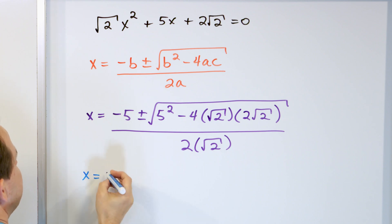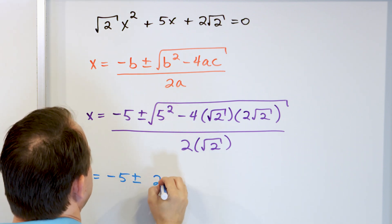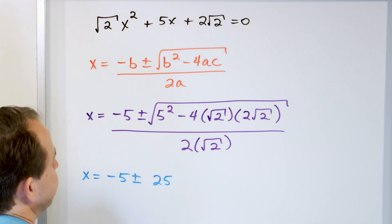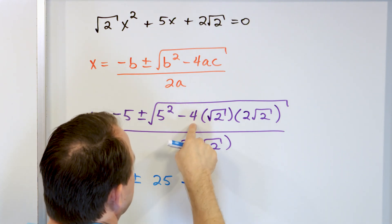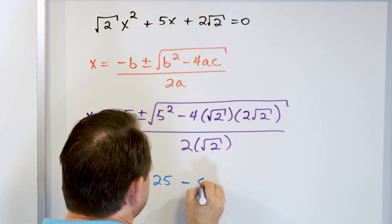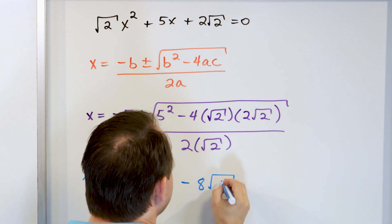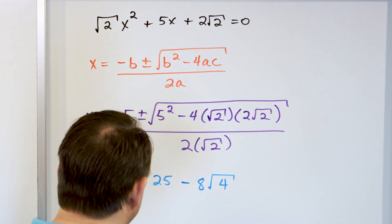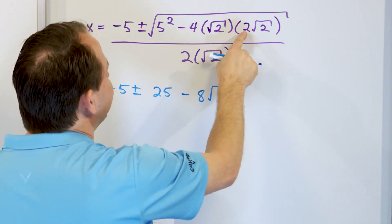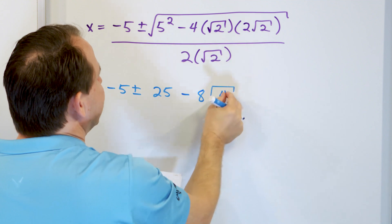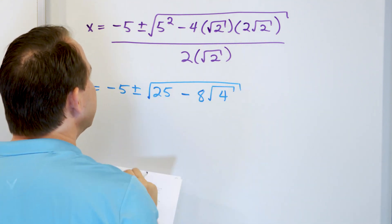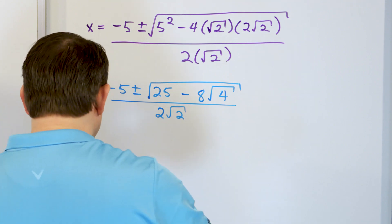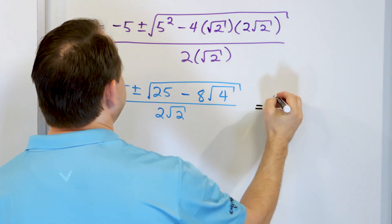Now we just have to be careful as we do the multiplication. Negative 5, plus or minus: 5 squared is 25. Here we know it's going to be a negative because of the negative sign. We have 4 times 2, which is 8. And then we have square root of 2 times square root of 2 — I'll write that as the square root of 4, because we can multiply radicals and combine what's under the radical. We multiply the coefficients giving us 8, and multiply the radicals giving us square root of 4 — because 2 times 2 is 4. This lives under the larger radical. On the bottom is just 2 times the square root of 2.